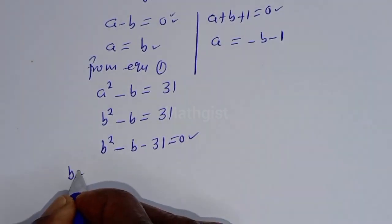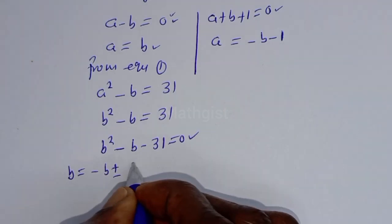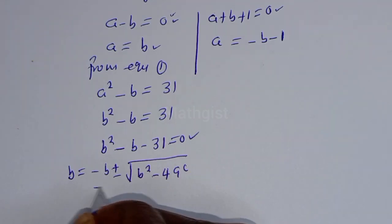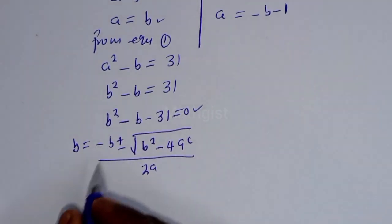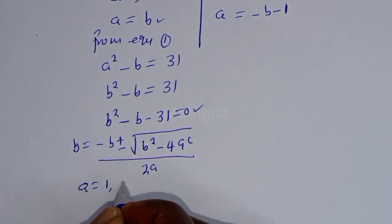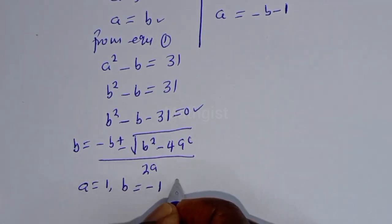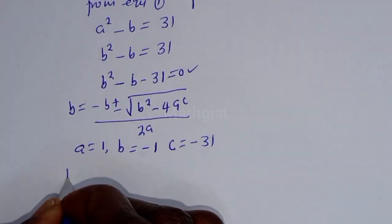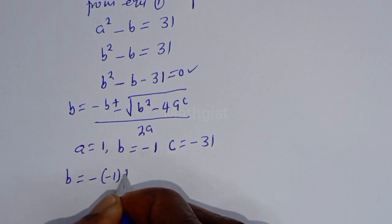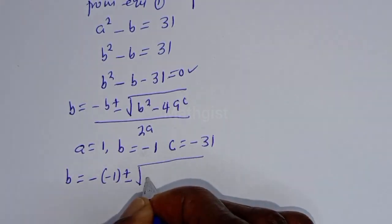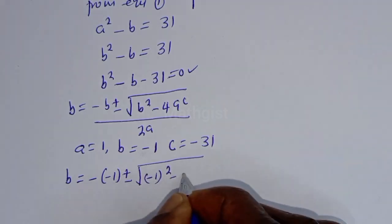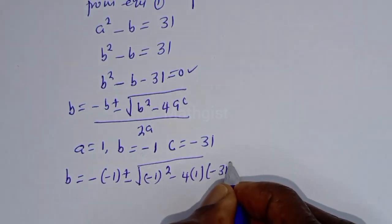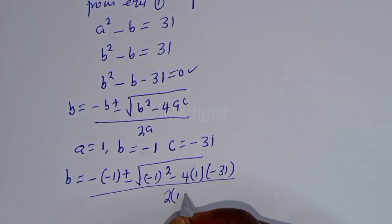Let's solve using the quadratic formula: b = (-B ± √(B² - 4AC)) / 2A, where A = 1, B = -1, and C = -31. Substituting: b = (-(-1) ± √((-1)² - 4(1)(-31))) / (2 × 1).